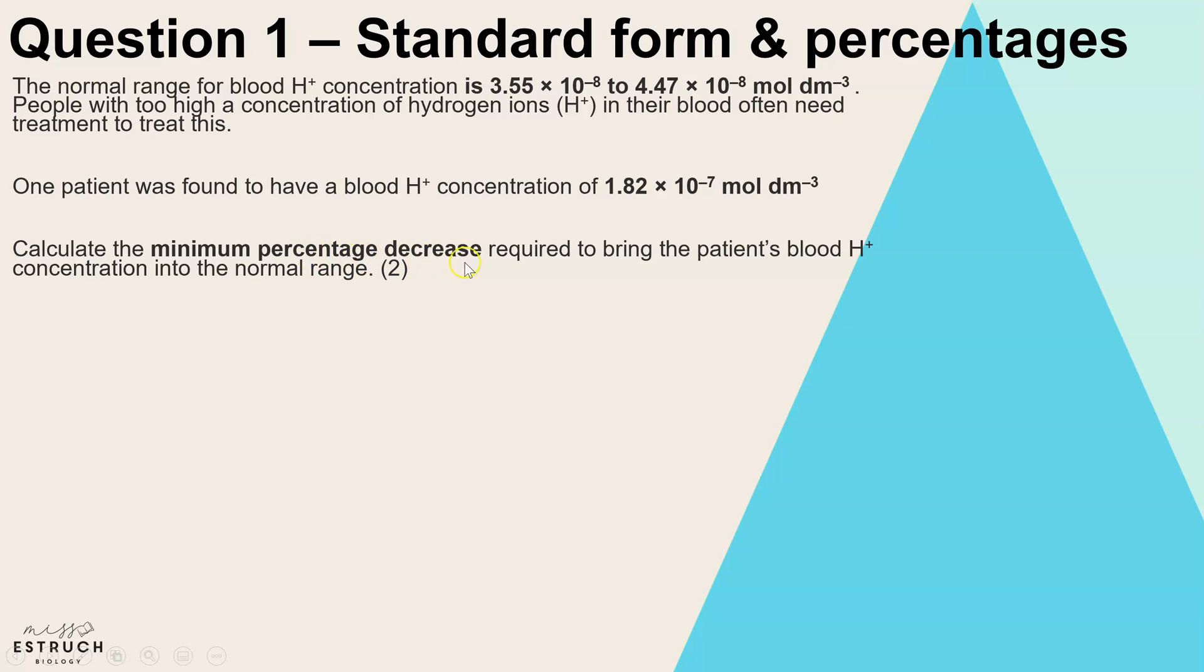So you have to calculate the minimum percentage decrease required to bring the patient's blood hydrogen ion concentration within the normal range. First, you have to get your head around this standard form and realize that if these are all times 10 to the minus 8 and the patient is 10 to the minus 7, this is actually a bigger value than both of those. So when you're told that their hydrogen ion concentration is outside of the range, it's too high. We need to work out the minimum percentage decrease to bring it within the normal range. So we need to work out first of all what is the difference between the upper end of the range and their value.